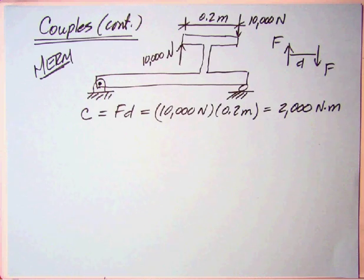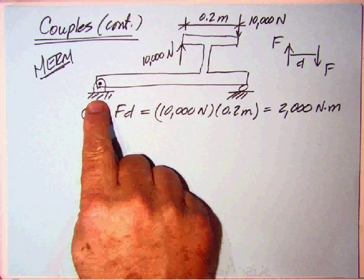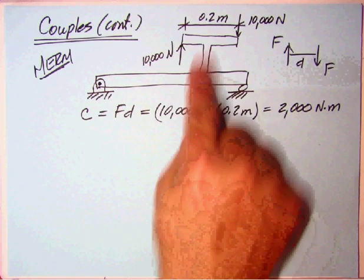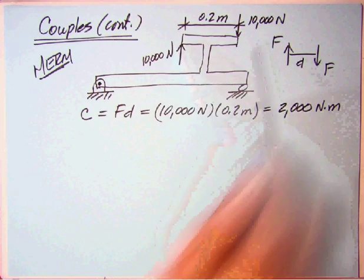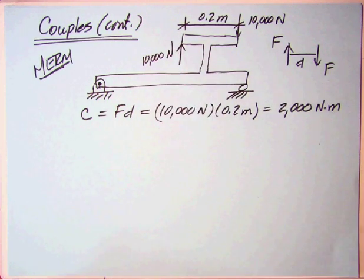In the MERM, he has this simply supported beam, a pin over here on the left and a roller, and he's got a little T projection here where he's showing 10,000 pounds up on this side and 10,000 pounds, not pounds, newtons, down on that side, and they're separated by 0.2 meters. So essentially he has this sort of diagram, force up on the left, force down on the right, perpendicular distance.